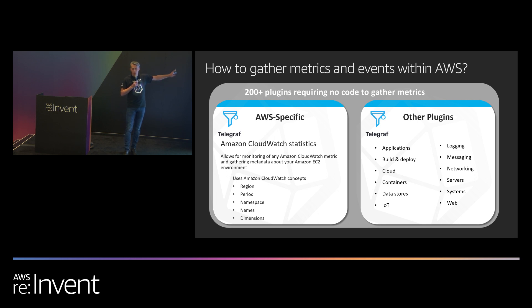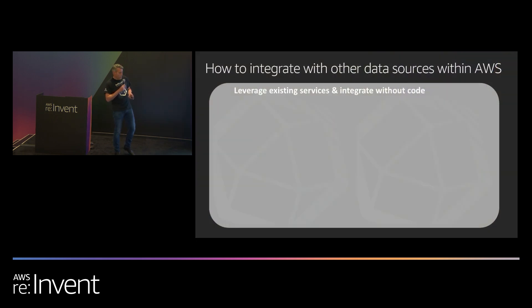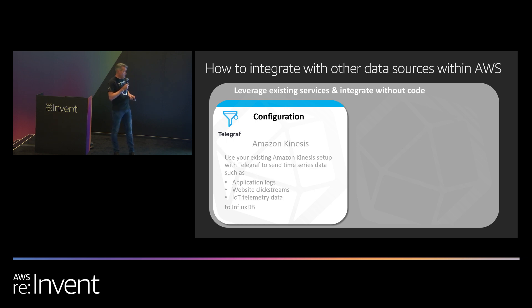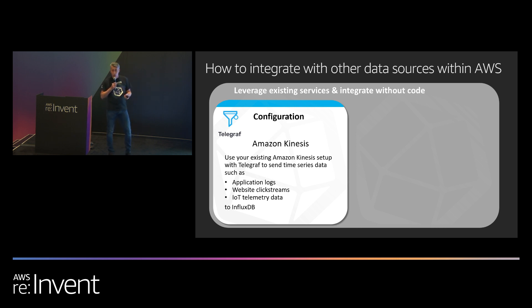Now, that's all about monitoring within the AWS environment itself. But what if you're building an application inside of AWS and you've got data that's flowing in? We have the ability for you to tap into that information without writing any code. For example, if you're using Kinesis, we have a specific Telegraf plugin for Kinesis that will allow you to both push data and pull data from Kinesis into Influx. Or you can take information from Influx and push it back to Kinesis as a mechanism for alerting and coordinating with other systems.